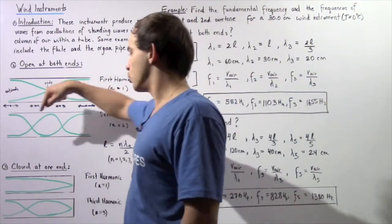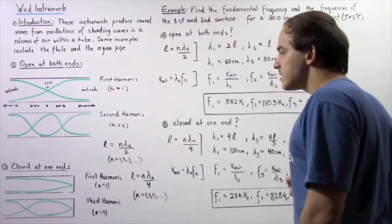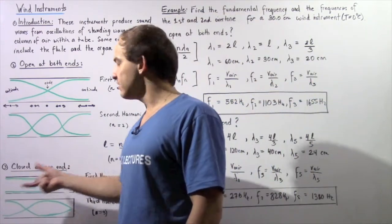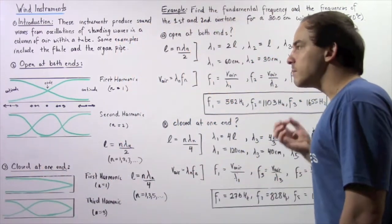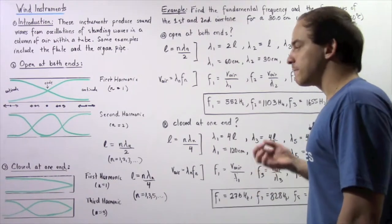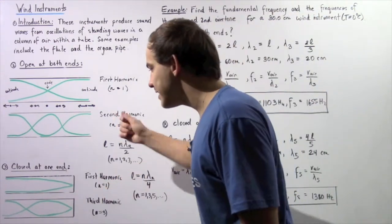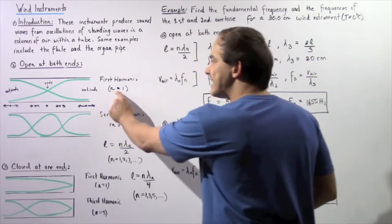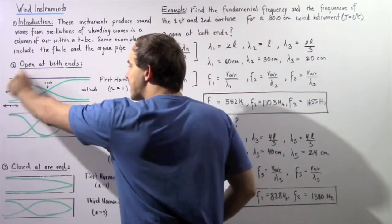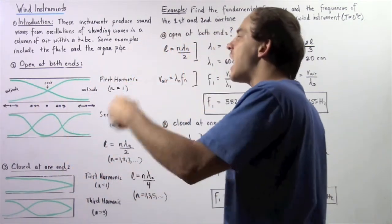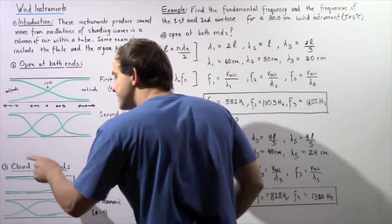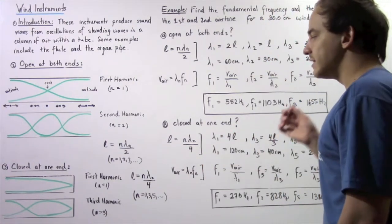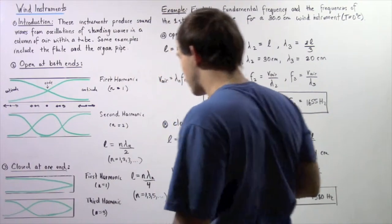Now let's move on to a pipe closed at one end. For a wind instrument that is open at one end and closed at the other, the first harmonic corresponding to the fundamental frequency (n equals 1) looks like this. Notice that when n equaled 1 for the open pipe, the wavelength was equal to 2 times the length; now the wavelength is equal to 4 times the length of the standing wave.